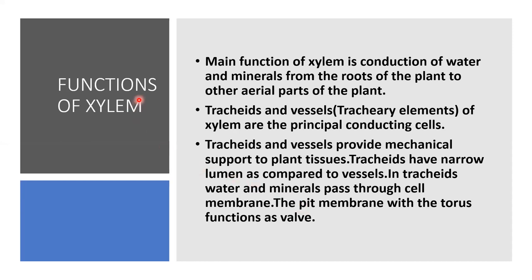Now we will discuss the functions of xylem. In angiosperms, 95% of water and mineral conduction occurs through vessels and 5% through tracheids. In gymnosperms, 95% of conduction is through tracheids and 5% through vessels. The main function of xylem is conduction of water and minerals from the root — which absorbs water and minerals from the soil — to the branches, leaves and various tissues of the plant via vessels and tracheids. Tracheids and vessels are also called tracheary elements and are the principal conducting cells.